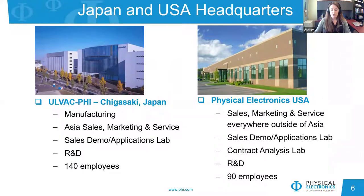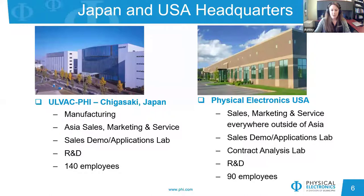Physical Electronics has two headquarters. Our parent company is Olvac PHI, located in Chikasaki, Japan, where instrument manufacturing takes place. They also cover sales, marketing, and service for all of Asia, and have a sales, demonstration, and applications lab, a large R&D department, and about 140 employees. Here at PHI USA in Chanhassen, Minnesota, we're the headquarters for sales, marketing, and service worldwide except for Asia. We also have our own demo and applications lab, a contract analysis lab, an R&D department, and about 90 employees here in the U.S.